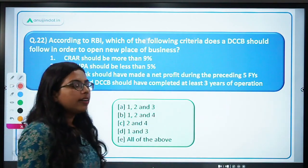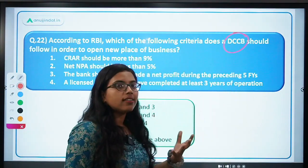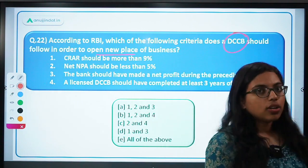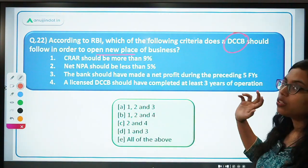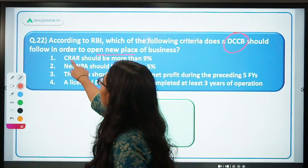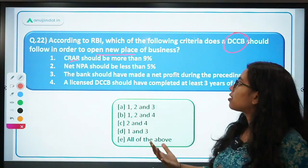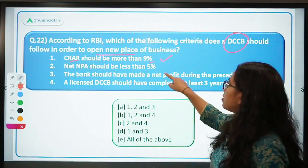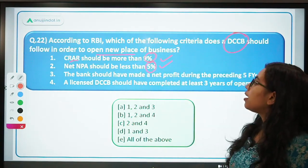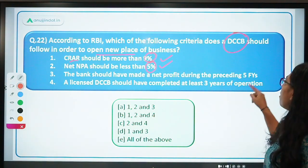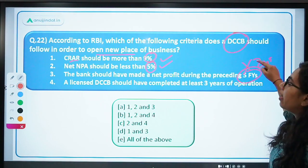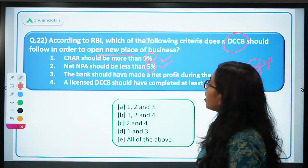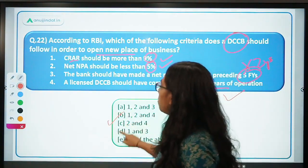Question: according to RBI, what criteria should a DCCB — district central cooperative bank — follow in order to open a new place of business? Statement 1: CRAR (capital to risk-weighted assets ratio) should be more than 9% — correct. Statement 2: net NPA should be less than 5% — correct. Statement 3: the bank should have made a net profit during the preceding 5 years — WRONG, it is 2 years. Statement 4: a licensed DCCB should have completed at least 3 years of operation — correct. So 1, 2, and 4 are correct — option B is the correct answer.